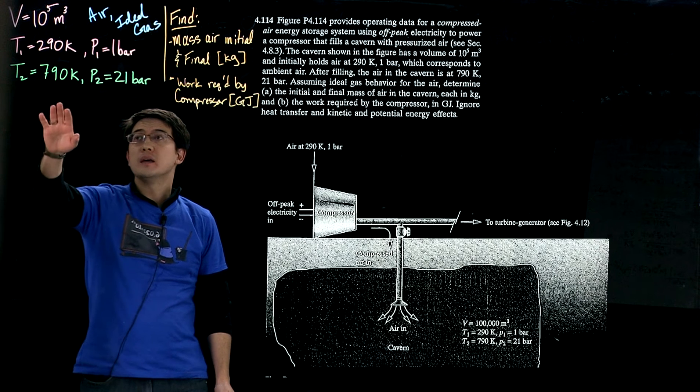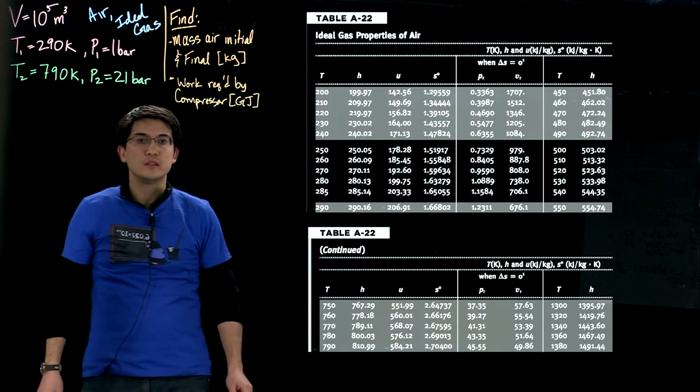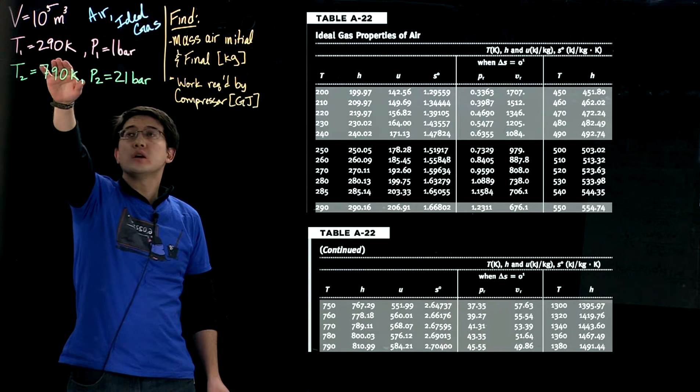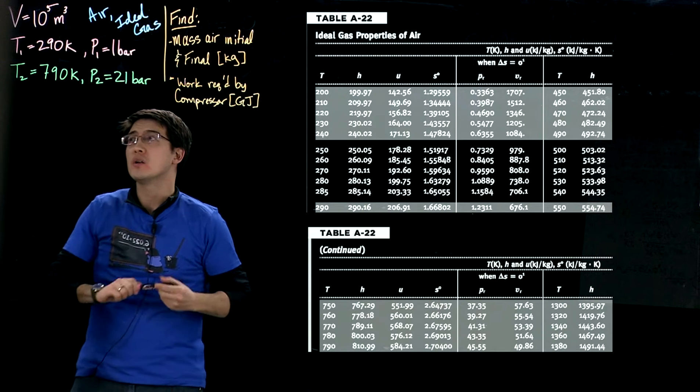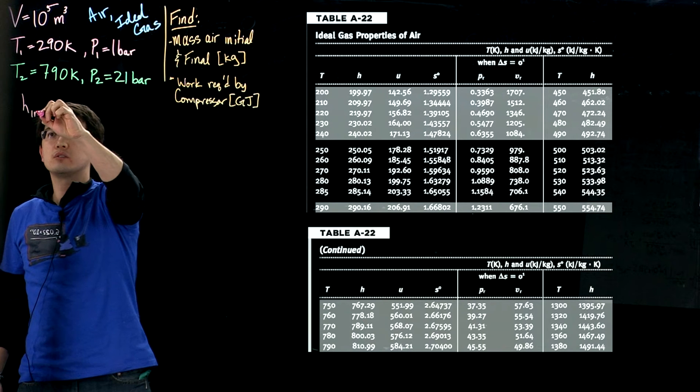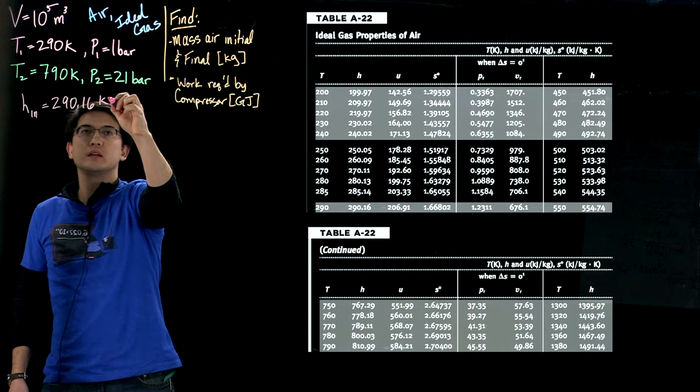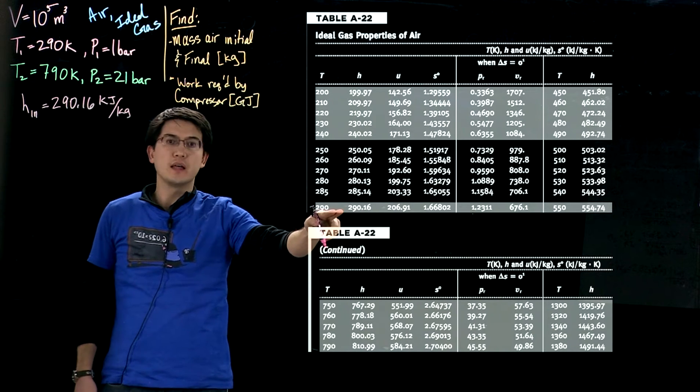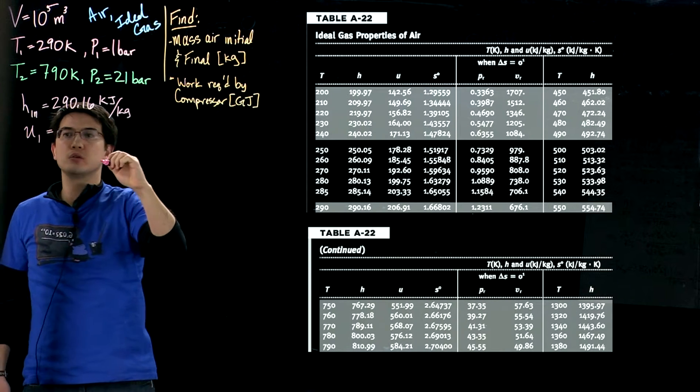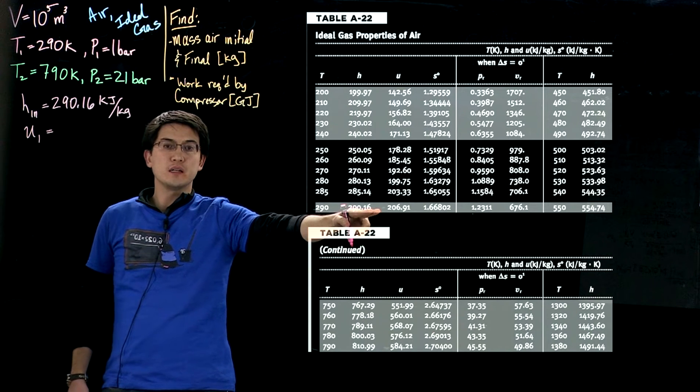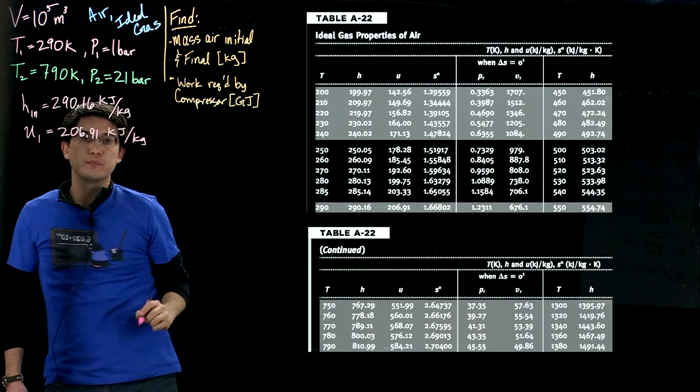The first thing we're going to need to look up is the enthalpy and internal energy at these states. I picked out the tables we'll need to use, tables A22. We know initially that we're at 290 Kelvin, so we're right about here at 290 Kelvin. We're going to pick out our enthalpy at this point. At the inlet state, the enthalpy of the air coming in is 290.16 kilojoules per kilogram. Also, internal energy at state one, which you can see right here, is 206.91 kilojoules per kilogram.